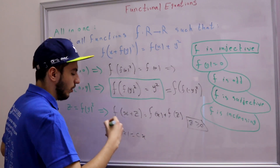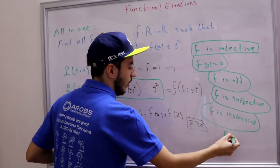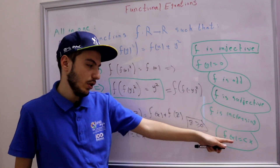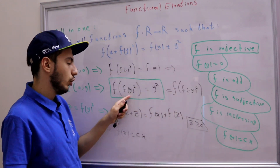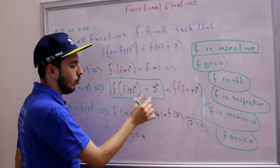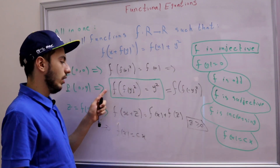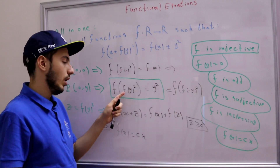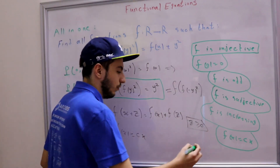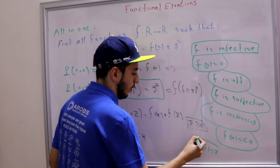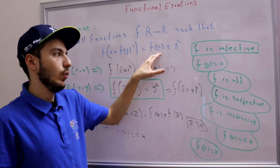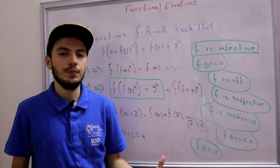So f(x) = cx. Now we just need to find the constant c. Substituting f(x) = cx into the relation f(f(y²)) = y²: f(f(y²)) = f(cy²) = c·cy² = c²y². Wait, let's use the original equation: substituting gives c(x + cy²) = cx + y², so we get c²y² = y², meaning c³ = 1, so c = 1. Therefore f(x) = x. Checking: x + y² = x + y² ✓. That is our solution.